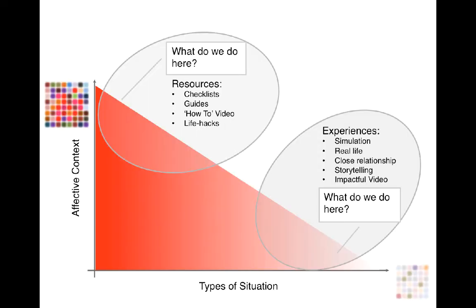So what does this mean for learning? Basically there are two kinds of things you can do. You can build resources where people care about something. You know how this works — if you really care about something, you'll look it up on Google and get the answer. It will be text, and it never occurred to you that text was a problem or that you needed a 40-minute interactive module. If you actually really care about doing something, then a checklist or a guide — something really simple — is what you need.